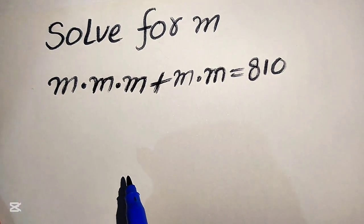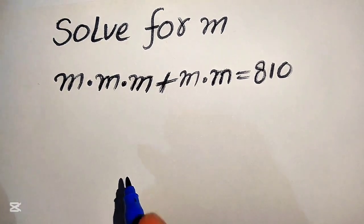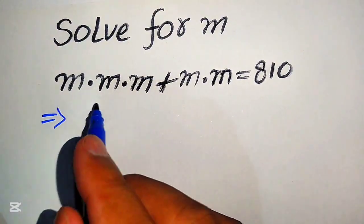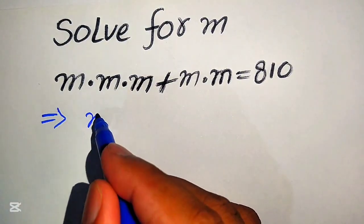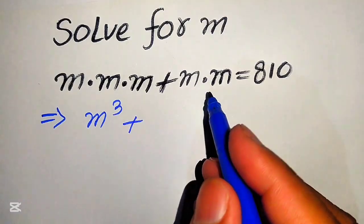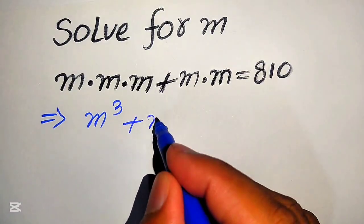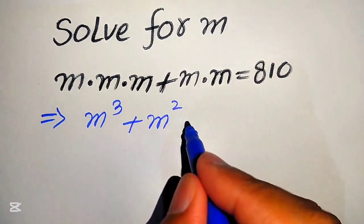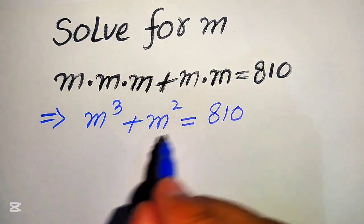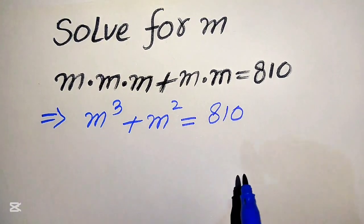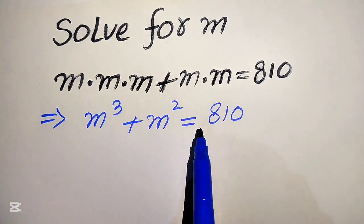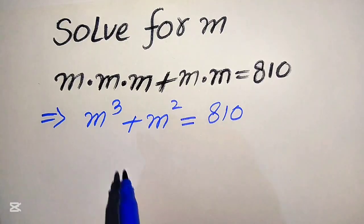The very first step we are going to do: m is multiplied three times, so we write it as m cubed, and here m is multiplied two times, so we write it as m squared, equals 810. Now we focus on 810 and we break it in the form of a cube and a square.